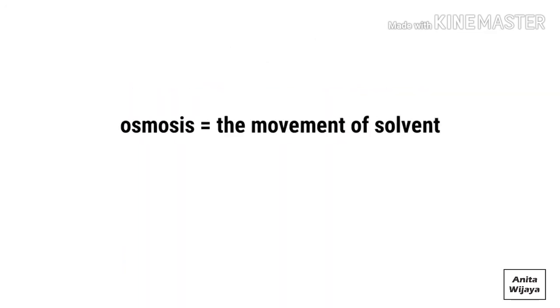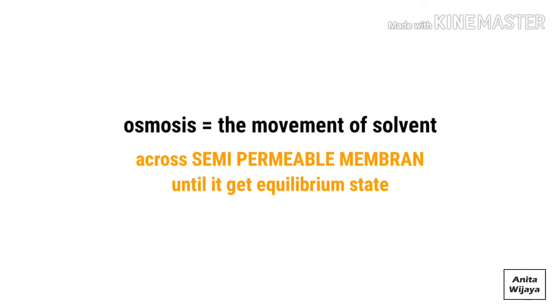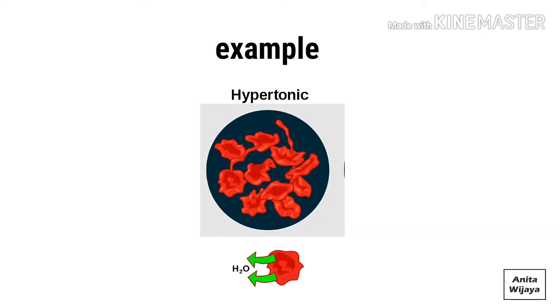Meanwhile, osmosis is the movement of solvent across a semi-permeable membrane until it gets the equilibrium state. The important part of osmosis is there should be a membrane, so only the solvent will move to the other zone. The example of osmosis is when a red blood cell swells up when exposed to fresh water.